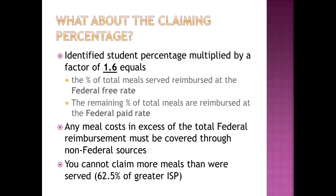So what about the claiming percentage? Your identified student percentage multiplied by a factor of 1.6 equals the percentage of meals reimbursed at the federal free rate. The remainder of that percentage is reimbursed at the paid rate. Any meal costs in excess of total federal reimbursement must be covered through non-federal sources. You can't claim more meals than were served, so if you reach 62.5% identified student percentage, essentially 100% of your meals are claimed at the free rate.